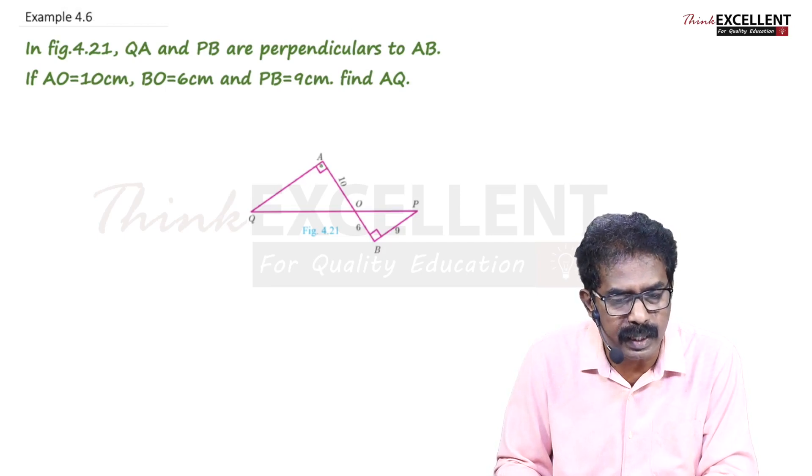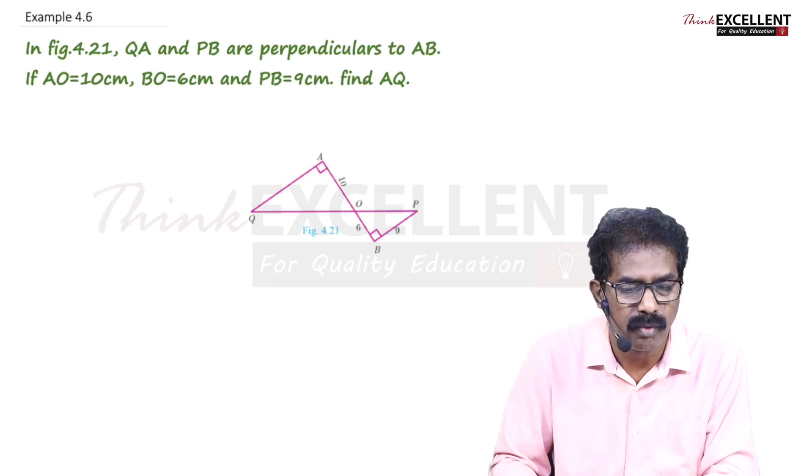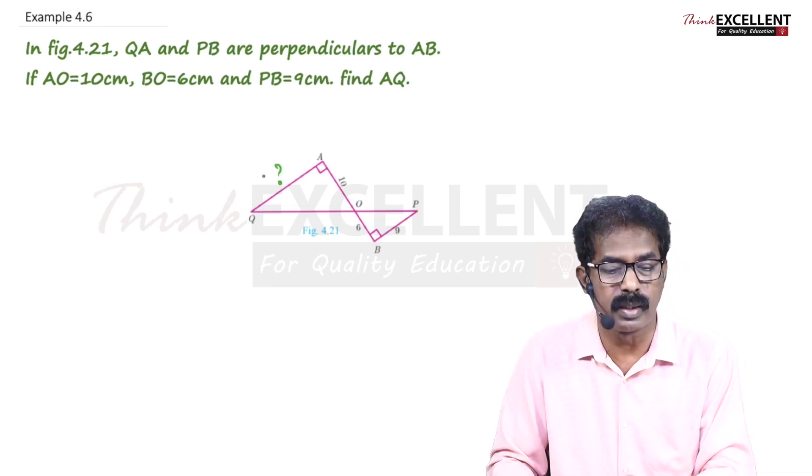AO is 10 centimeters, BO is 6 centimeters, PB is 9 centimeters. Find AQ. This is what they are asking.